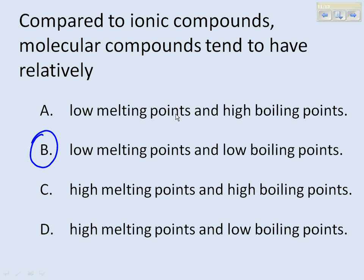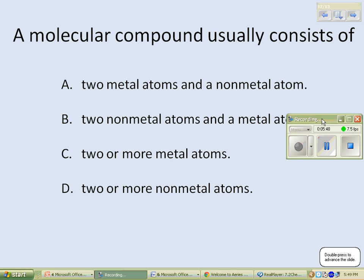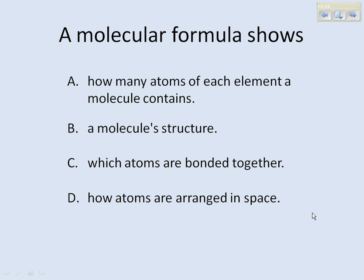Some review questions. Compared to ionic compounds, molecular compounds tend to have relatively low melting points and low boiling points. A molecular compound usually consists of two or more non-metals. A molecular formula shows how many atoms of each element a molecule contains. That's it for our introduction.